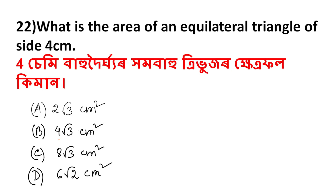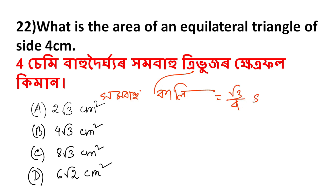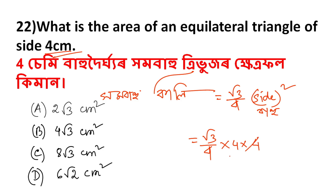Next question: what is the area of an equilateral triangle? The formula for the area of an equilateral triangle is (√3/4) × side². For example, if the side is 4 cm, the area is (√3/4) × 4² = (√3/4) × 16 = 4√3 centimeters squared. So the answer is 4√3 cm², which is option B.